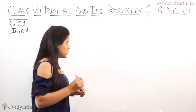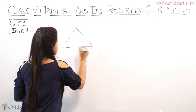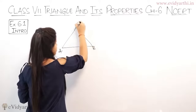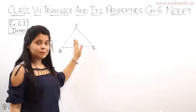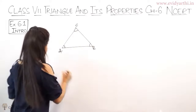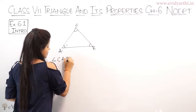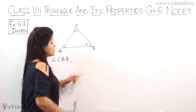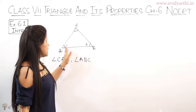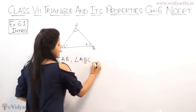First, everyone knows what a triangle is. So let's suppose I am taking a triangle and naming it as ABC. This is triangle ABC. Now, the angles are: angle CAB is one angle, angle ABC — you can also say it as CBA or ABC, both refer to the same angle — is the second angle.